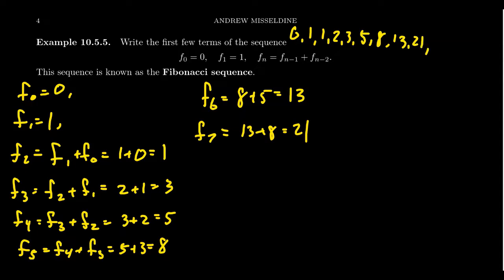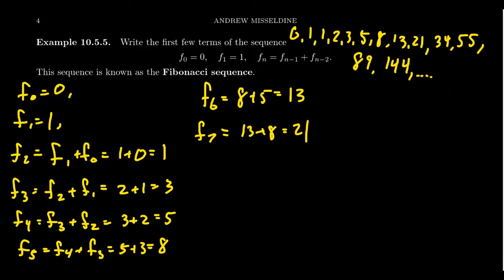We can keep going: the next term is 21 + 13 = 34, then 34 + 21 = 55, then 55 + 34 = 89, then 89 + 55 = 144, and so on. The Fibonacci sequence is very famous for many reasons, one being its connection to the golden ratio. There are lots of interesting applications of the Fibonacci sequence, which we won't go into right now. But this sequence has a very simple recursion involving the two previous terms.